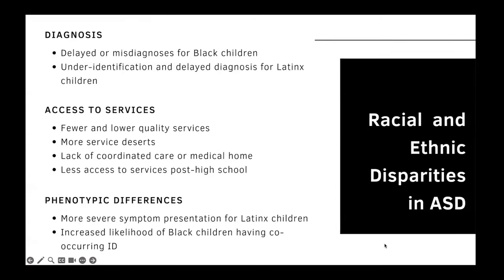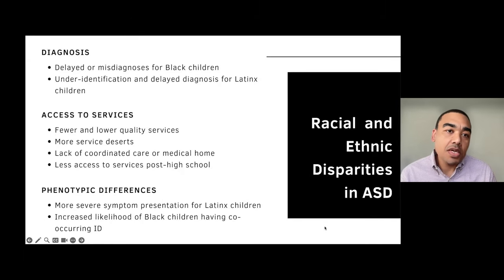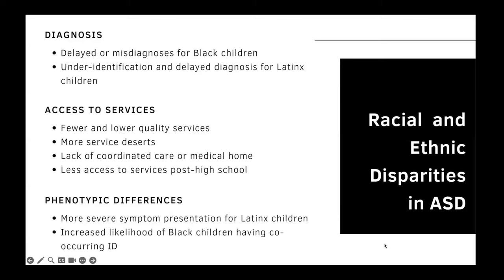We have over a decade of research documenting disparities along racial and ethnic lines within autism. We know that while we are identifying children of color with autism more, which is a wonderful thing, disparity still shows up. We still see delayed or misdiagnoses among Black children — the timing of diagnosis remains an issue. They're also more likely to receive other diagnoses, such as conduct disorder or ADHD, prior to getting a diagnosis of autism.